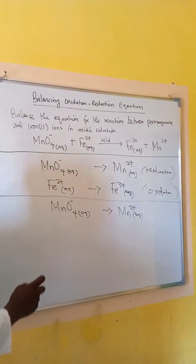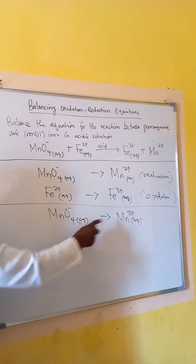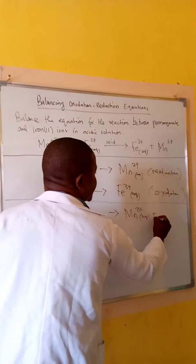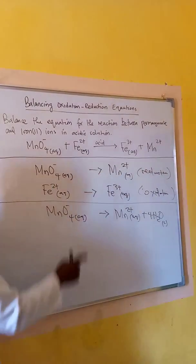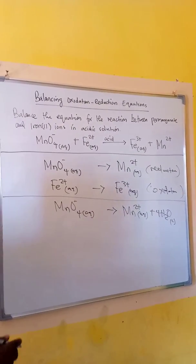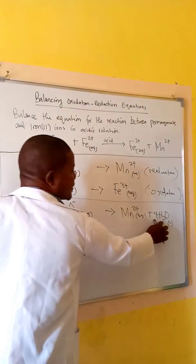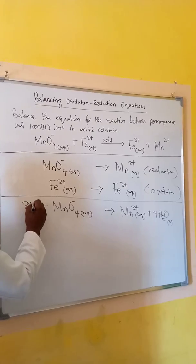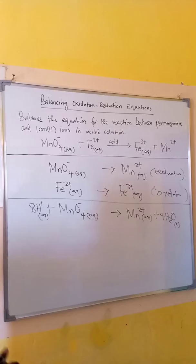Next, we balance the oxygen using water. We have four oxygens, so we add four water molecules to the side that needs oxygen. The water introduces hydrogen atoms, so we then balance hydrogen using hydrogen ions. There are eight hydrogens, so we add eight hydrogen ions to that side. Now all the atoms are balanced.